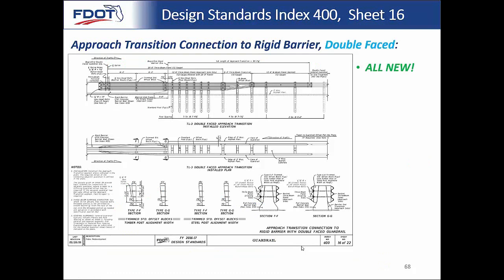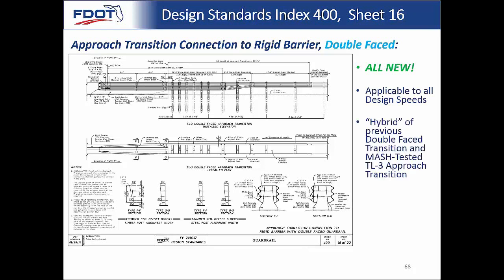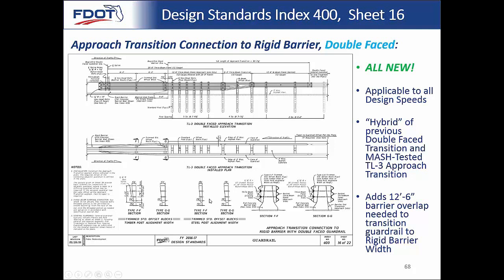Sheet 16 shows another approach transition connection to rigid barrier, this time for double-faced guardrail. This is an all-new connection applying to all design speeds — a hybrid of the previous double-faced connection and the new MASH-tested TL3. Everything from the rigid barrier face over has post spacing similar to the TL3 single-faced version, now with a double-faced system. An added 12-foot-6-inch overlap is included to transition the overall guardrail system width back down to the width of the double-faced rigid barrier. The system is not nearly as wide as that guardrail system, but you need a smooth transition, so offset blocks — each progressively smaller (trimmed offset blocks) — are used.